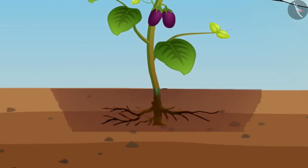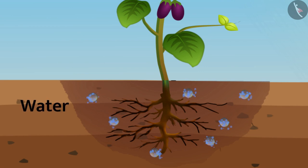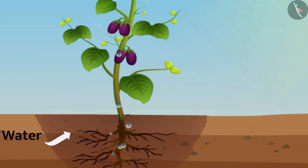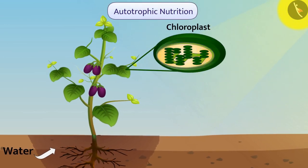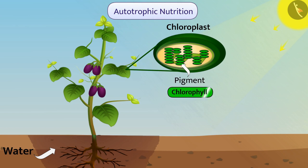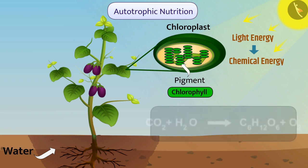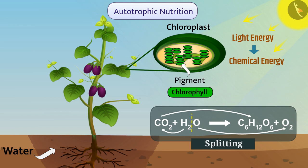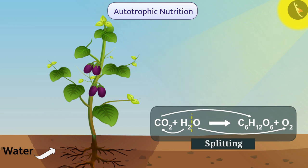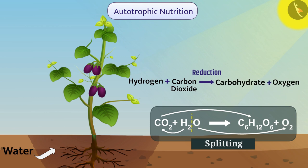Similarly, the roots of the plant absorb water from soil and send it upward so that the water requirement can be fulfilled. Green leaves have chloroplasts that contain a pigment called chlorophyll. During photosynthesis, chlorophyll absorbs light energy. Through different reactions, light energy is converted into chemical energy. Similarly, the water molecules are split into hydrogen and oxygen. With the help of the obtained hydrogen, carbon dioxide is reduced to carbohydrate and oxygen is released into the air.